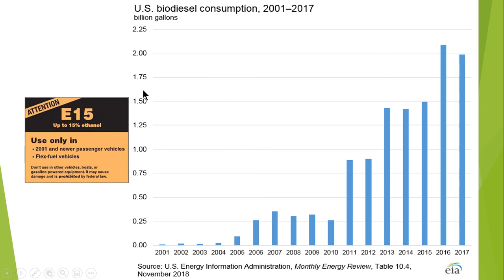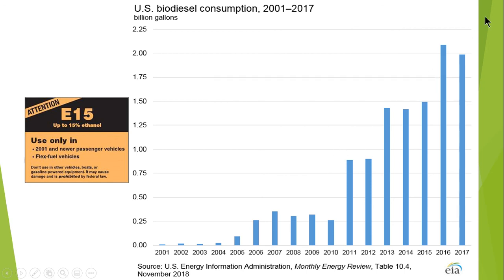It is sold with a label indicating use in vehicles from 2001 and newer passenger vehicles, because from 2001 onwards the compression ratio of diesel engines has been significantly improved. From 2001 to 2007, the trend of biodiesel consumption was on the increase, then it decreased and stayed somewhat constant, and now it is increasing exponentially.